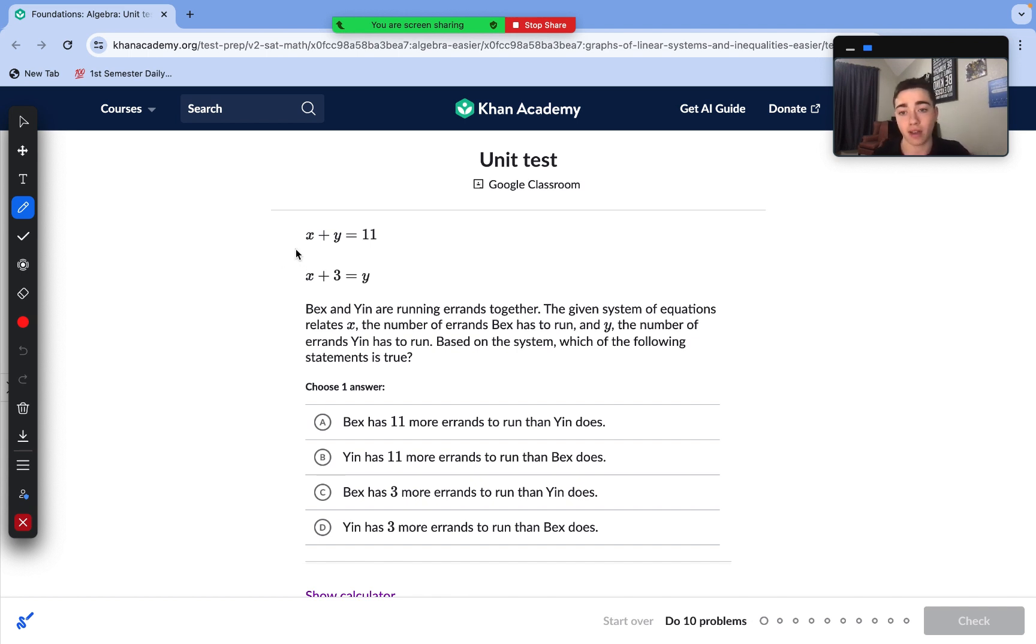First question here, we have a systems of equations. Bex and Yin are running errands together. The given system of equations relates x, the number of errands Bex has to run, and y, the number of errands Yin has to run. Based on the system, which of the following statements is true? Before even moving to our answer choices, we can start analyzing these two equations. We know that the total number of errands, adding up both Bex's and Yin's errands, is going to be 11, and to find Yin's number of errands, we need to add 3 to Bex's number of errands, meaning that Yin runs 3 more errands than Bex does. I believe that is in answer choice D. So answer choice D is correct.